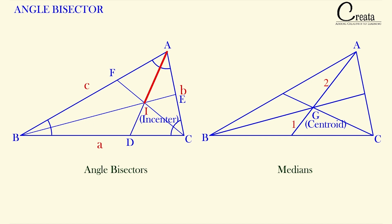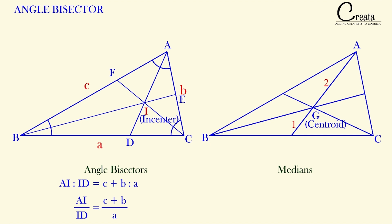In this case, the incenter divides the angle bisector — that is AI to ID — in the ratio of the sum of two sides. The formula is: AI : ID = (b + c) / a. We are comparing it with the median-centroid relationship.